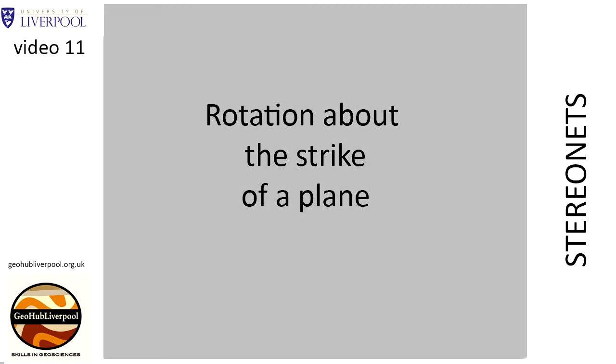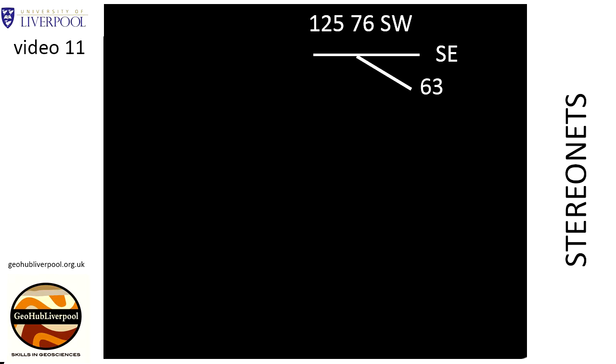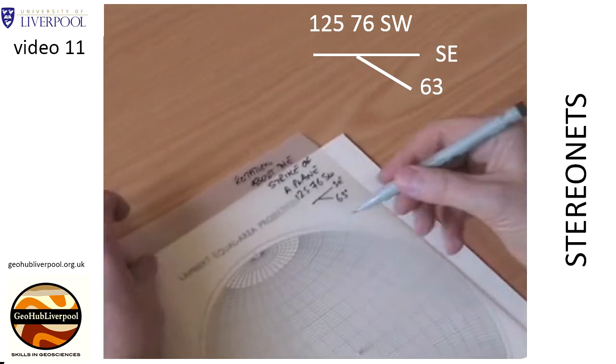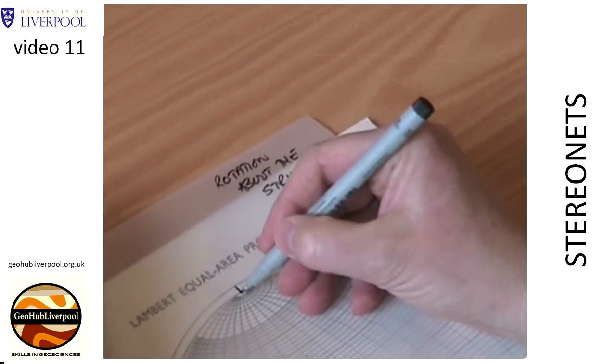In this example, the bedding plane has a strike of 125 degrees and a dip of 76 degrees towards the southwest. The linear sedimentary structures on this plane have a pitch of 63 degrees southeast. Start by marking the north pole on the tracing paper.